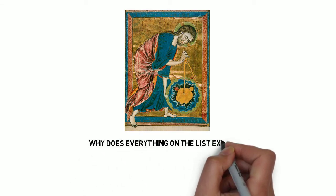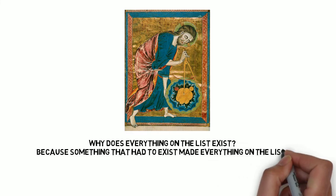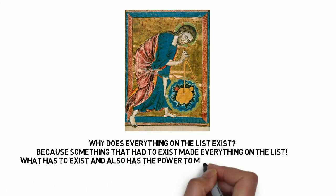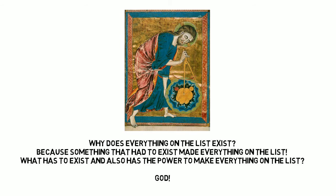So we're left with God as the architect of the universe and the explanation for why all the contingent things on the list exist. Why does everything on the list of contingent things exist? Because something had to exist, and that made everything else on the list. And what has to exist, and also has the power to make everything else on the list? Well, the answer to that is God.